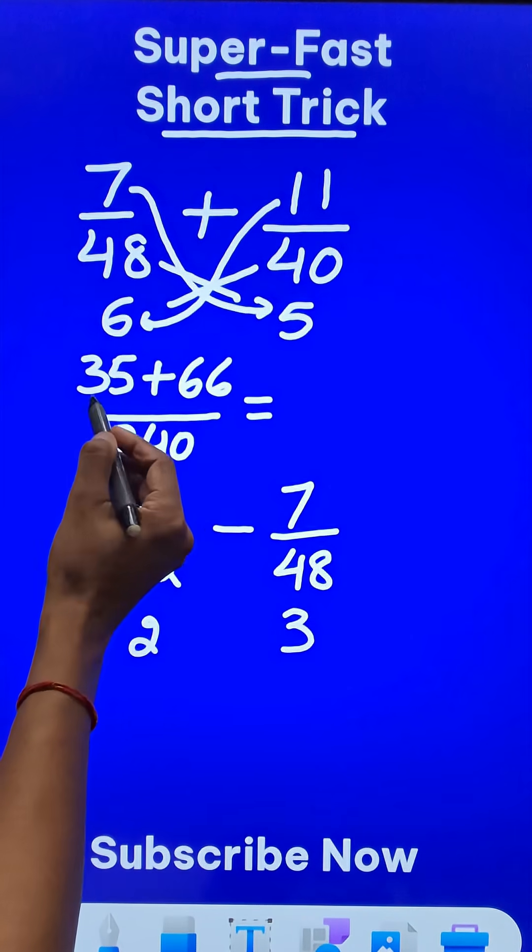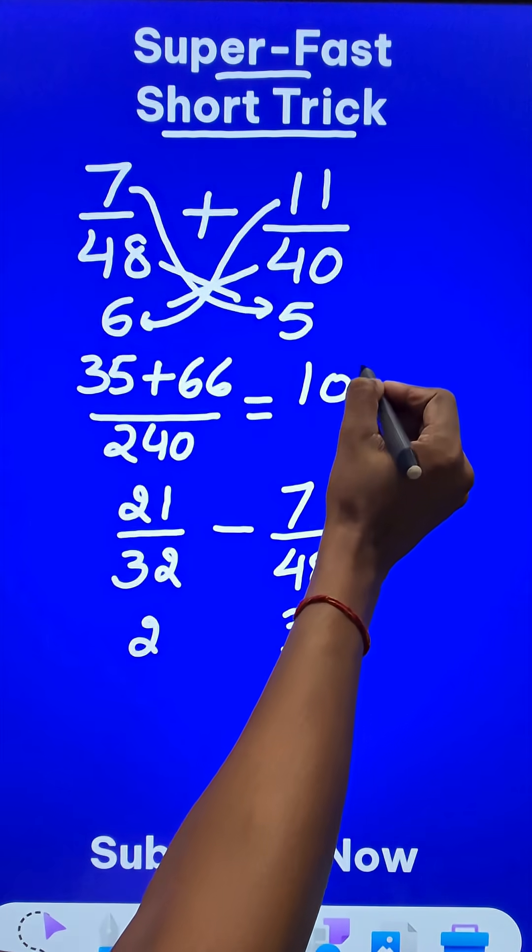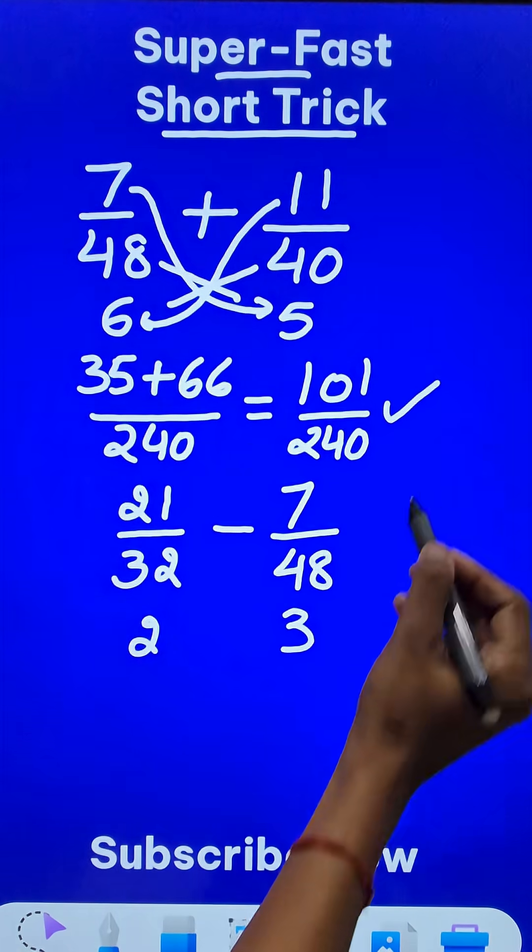And what is the answer for the question? 101 upon 240. And you can check your answer.